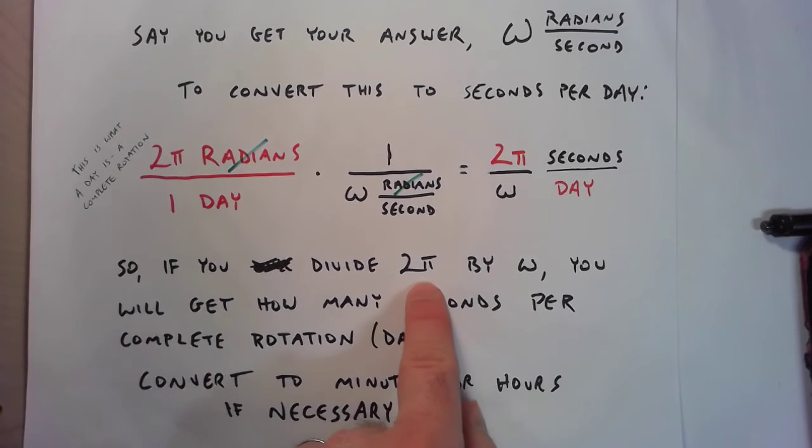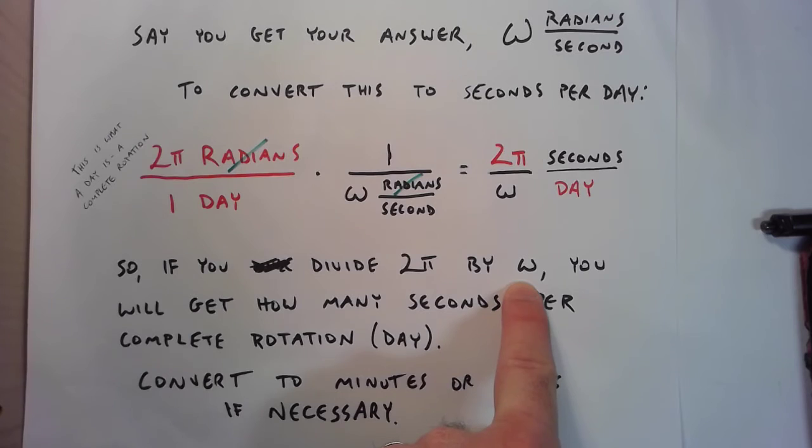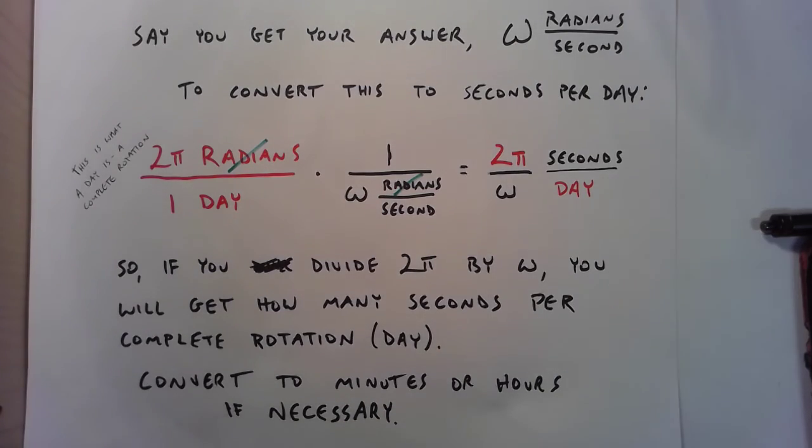So, if you divide 2 pi by your answer omega radians per second, it will just straight up give you how many seconds it will take for the earth to completely turn around once. If it's a very large number of seconds, you could convert it to minutes or hours, whatever makes the most sense. That's all.